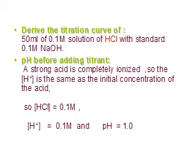The first point is the pH before adding titrant. Since the strong acid is completely ionized, the molar concentration of the hydrogen ion equals the initial concentration of the acid. Here, the molar concentration of HCl is 0.1 molar, so the hydrogen ion concentration is 0.1 molar, and the pH equals minus log(0.1), which is 1.